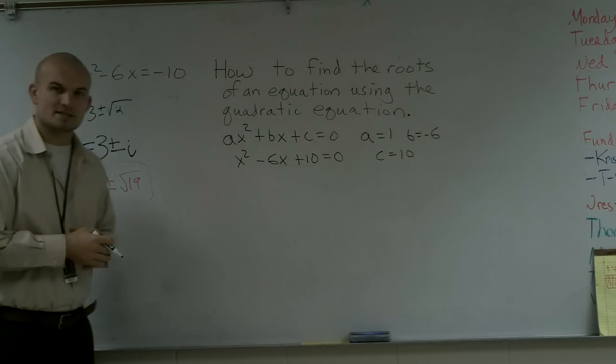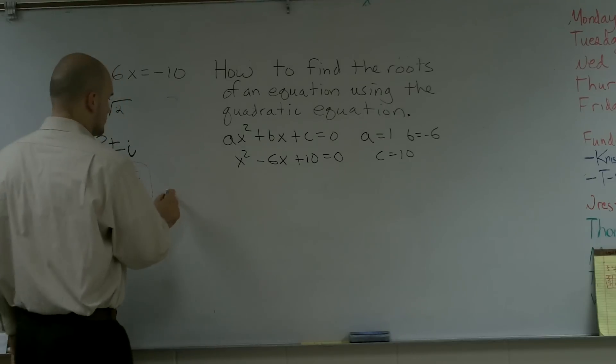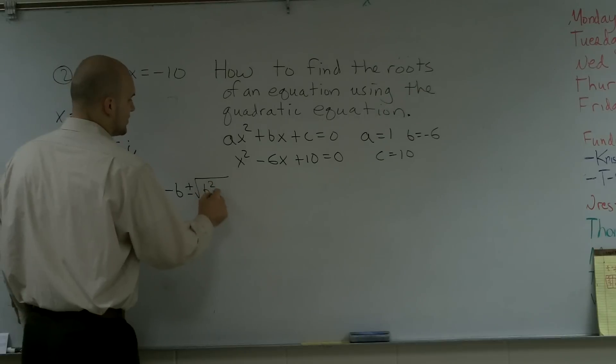So now what I'll do is I'll plug this into the quadratic formula which is opposite of b plus or minus the square root of b squared minus 4 times a times c all over 2a.